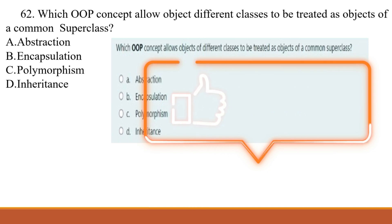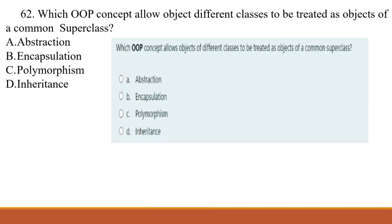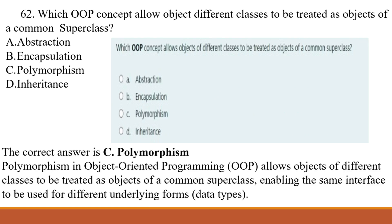Question 62: Which object-oriented programming concept allows objects of different classes to be treated as an object of a common superclass? A) abstraction, B) encapsulation, C) polymorphism, D) inheritance. The correct answer is C, polymorphism. Polymorphism in OOP allows objects of different classes to be treated as objects of a common superclass, enabling the same interface to be used for different underlying forms or data types.